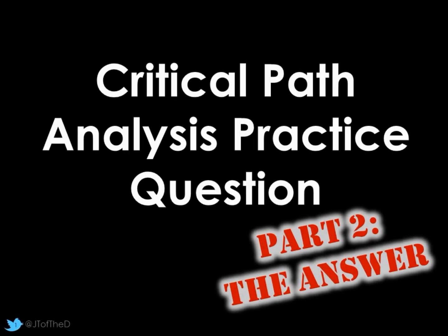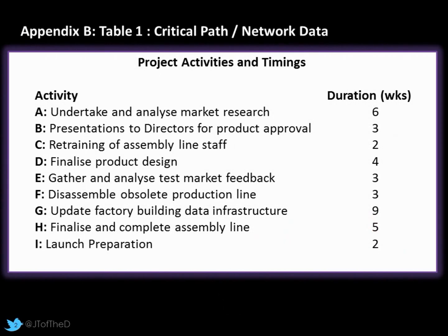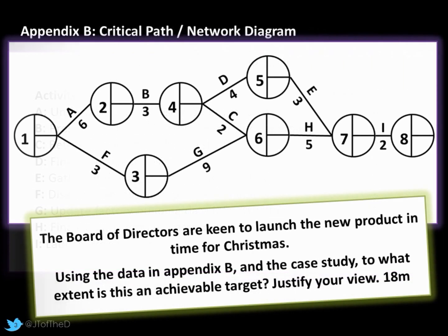In this video tutorial we're going to look at our Critical Path Analysis practice question. This is part two - the answer. We had a case study with a fair bit of information. In our appendix we had two bits of information: table one was our list of activities and their durations, and we also had the Critical Path Network diagram which was given to us blank. You may get this in an exam; alternatively you may get one which is partially or completely filled in and they ask you to make some changes. So this will be far more than you would be asked to do in an exam.